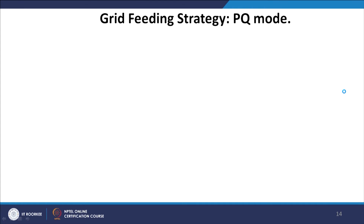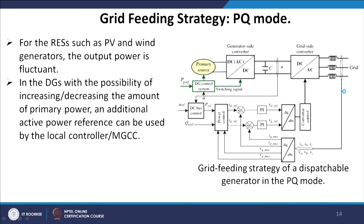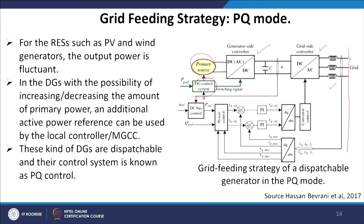For the grid feeding strategy of a PV generator with a variable DC voltage for MPPT, the setup is simple: PV generators are connected to the grid and as a passive generator can feed energy through controlling D and Q components of current. For the grid feeding strategy in PQ mode for renewable energy sources such as PV and wind generators, the output power is fluctuating. For DGs with the possibility of increasing or decreasing the amount of primary power, an additional active power reference can be used by the local controller MGCC. Dispatchable generators are controlled using PQ control.